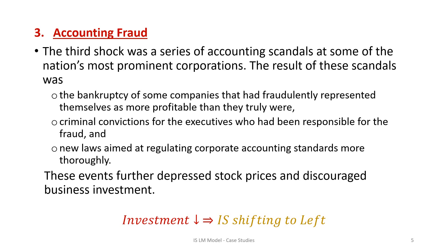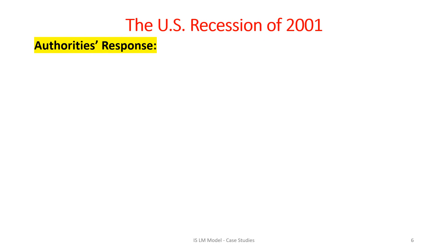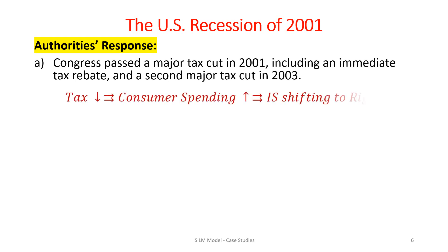Together, these three factors resulted in a significant drop in GDP. In response, Congress passed a tax cut in 2001, including an immediate tax rebate, and a second major tax cut in 2003. These tax cuts increased the take-home or disposable income of households and thus resulted in increasing consumer spending, pushing the IS curve to the right.